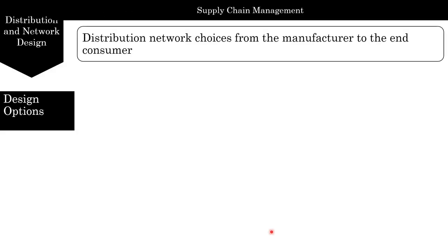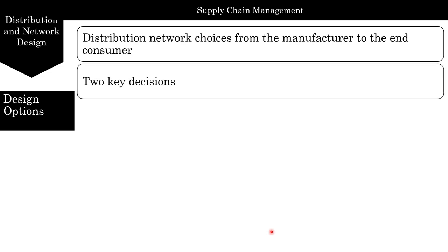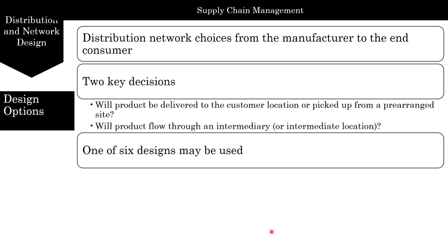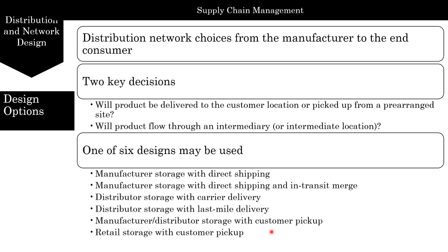Let's look at some design options for a distribution network. Design choices from manufacturer to end consumer rest on two key decisions: first, will the product be delivered to the customer location or picked up from a pre-arranged site; and second, will product flow through an intermediary or intermediate location. Based on these answers, there are six different designs: manufacturer storage with direct shipping; manufacturer storage with direct shipping and in-transit merge; distributor storage with carrier delivery; distributor storage with last mile delivery; manufacturer or distributor storage with customer pickup; and retail storage with customer pickup.